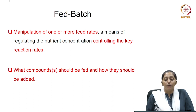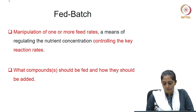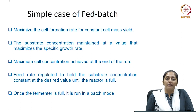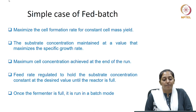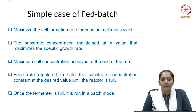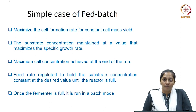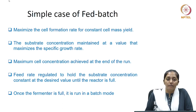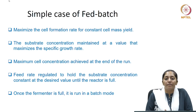The regulation of the nutrient concentration is carried out by manipulating one or more of these parameters in a fed batch operation. Let us take a simple case of fed batch and try to design the fed batch kinetics. The objective of running a fed batch operation is to maximize the cell formation rate for a constant cell mass yield (Y_x/s), maximizing cell mass concentration X.